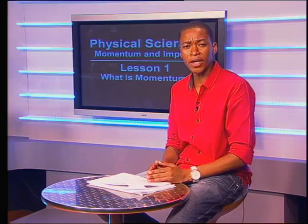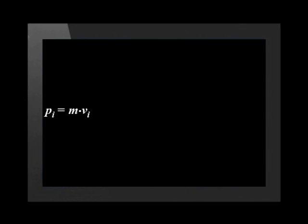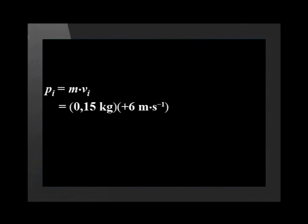Now we can calculate the momentum before the bounce. Because momentum and velocity are vectors, we have to choose a direction as positive. For this example, we chose the initial direction of motion as positive — in other words, downwards is positive. Initial momentum p subscript i equals mass times initial velocity v subscript i. This equals 0.15 kilograms times positive 6 meters per second, which equals 0.9 kilogram meters per second downward.